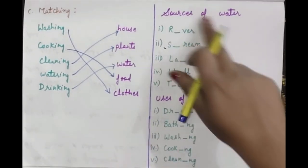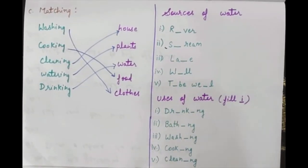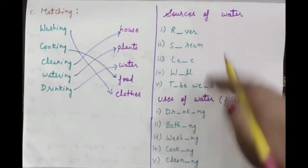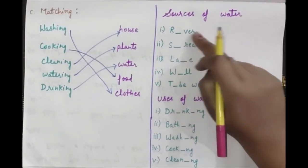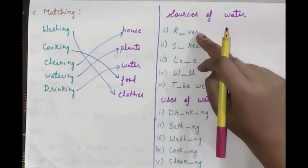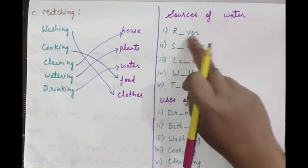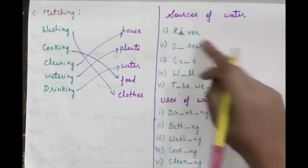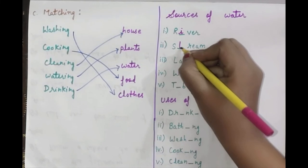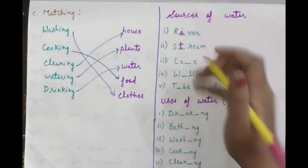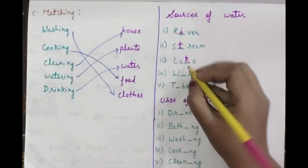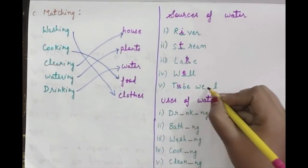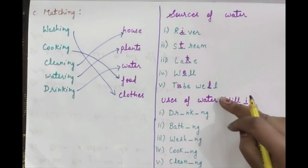Then we have sources of water. For children to learn the sources of water, I have written some words here. In this way we will complete this word and children will also learn the spelling. River, stream, lake, well, and tube well. So we can learn the sources of water.